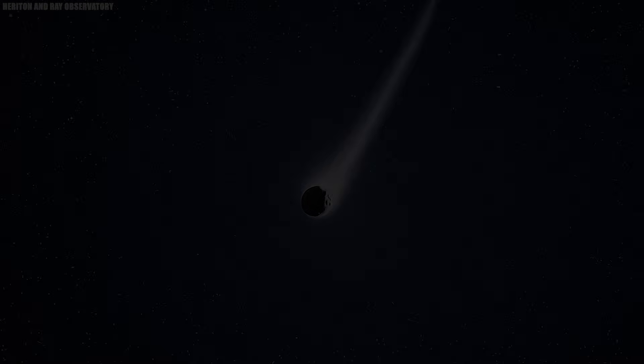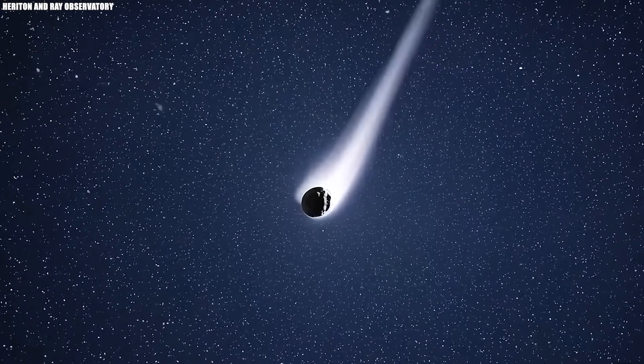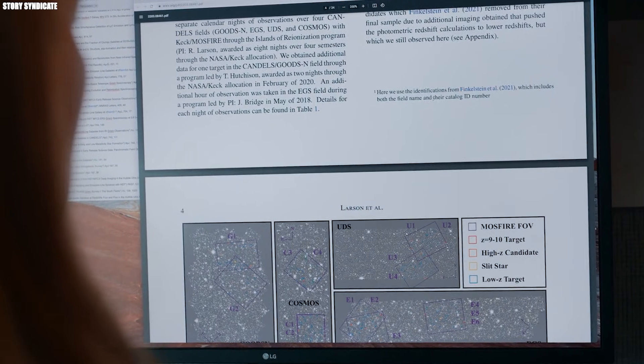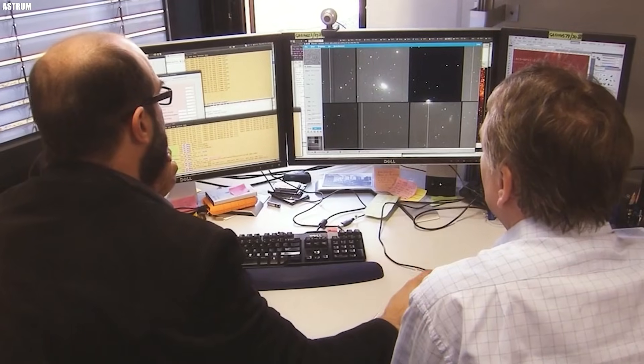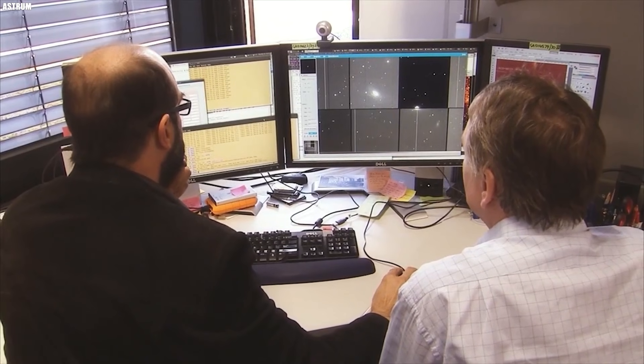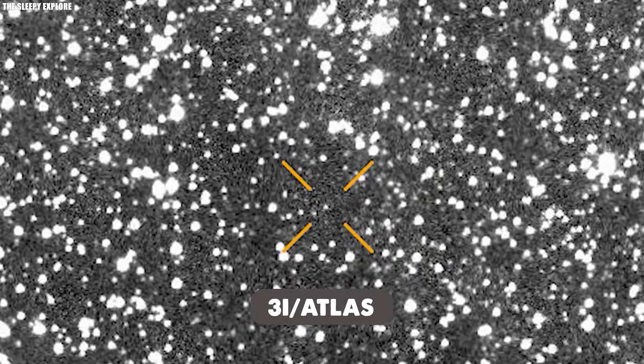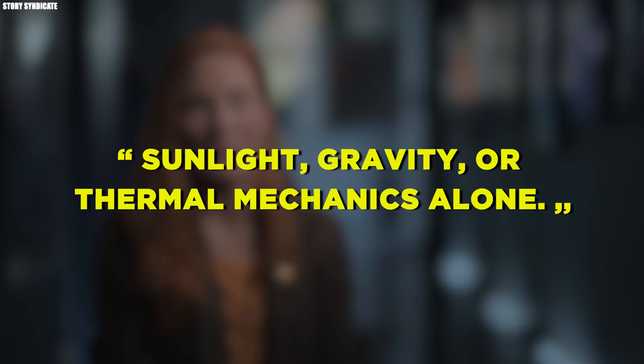Right now, a fleet of NASA spacecraft are turning their attention to an unusual object through our solar system. It did not come from a headline. It came from inside the system. A former senior NASA scientist, someone with years of classified experience in flight systems and deep space observation, has stepped forward. After reviewing the data on 3I Atlas, he believes the object displays what he called layered anomalies. According to him, these patterns cannot be explained by sunlight, gravity, or thermal mechanics alone.